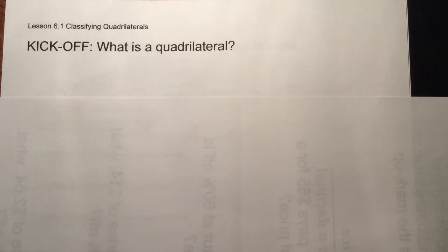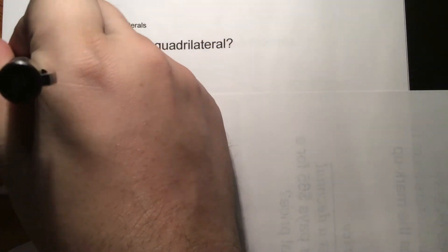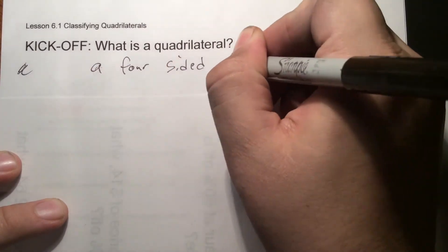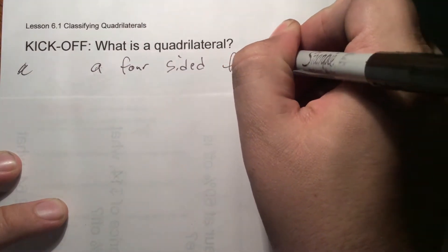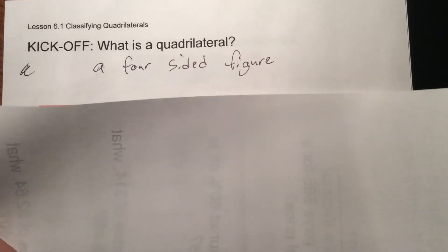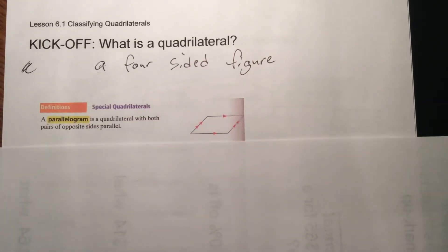So what is a quadrilateral? The official definition of a quadrilateral is any four-sided figure. Any four-sided figure is a quadrilateral.